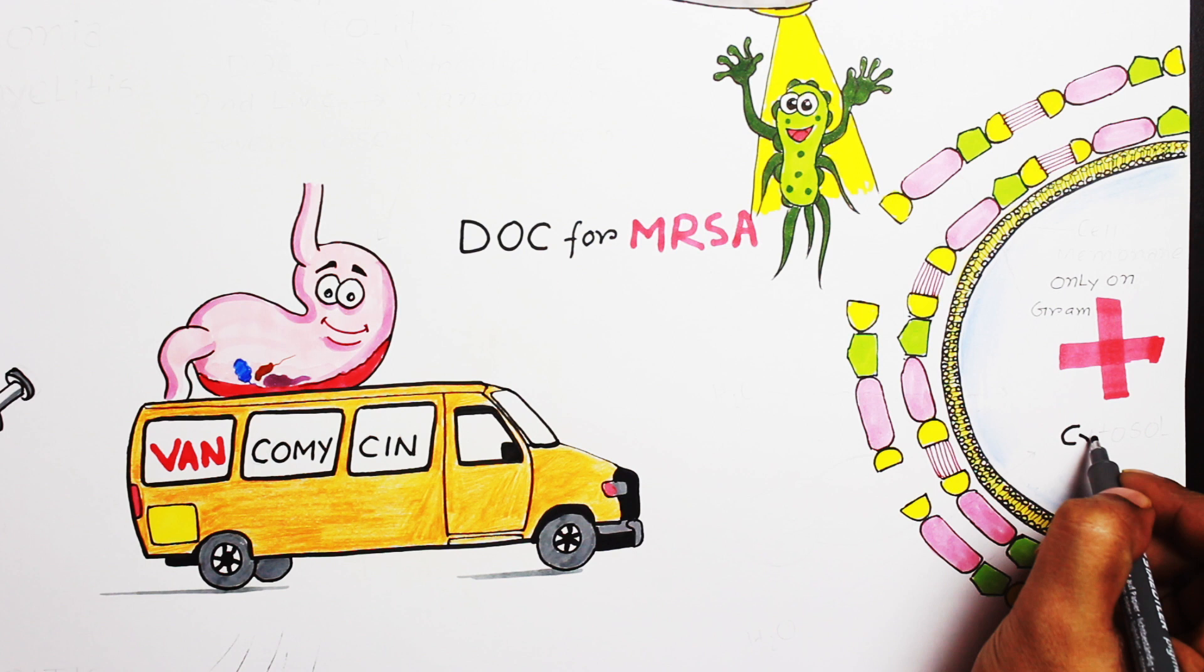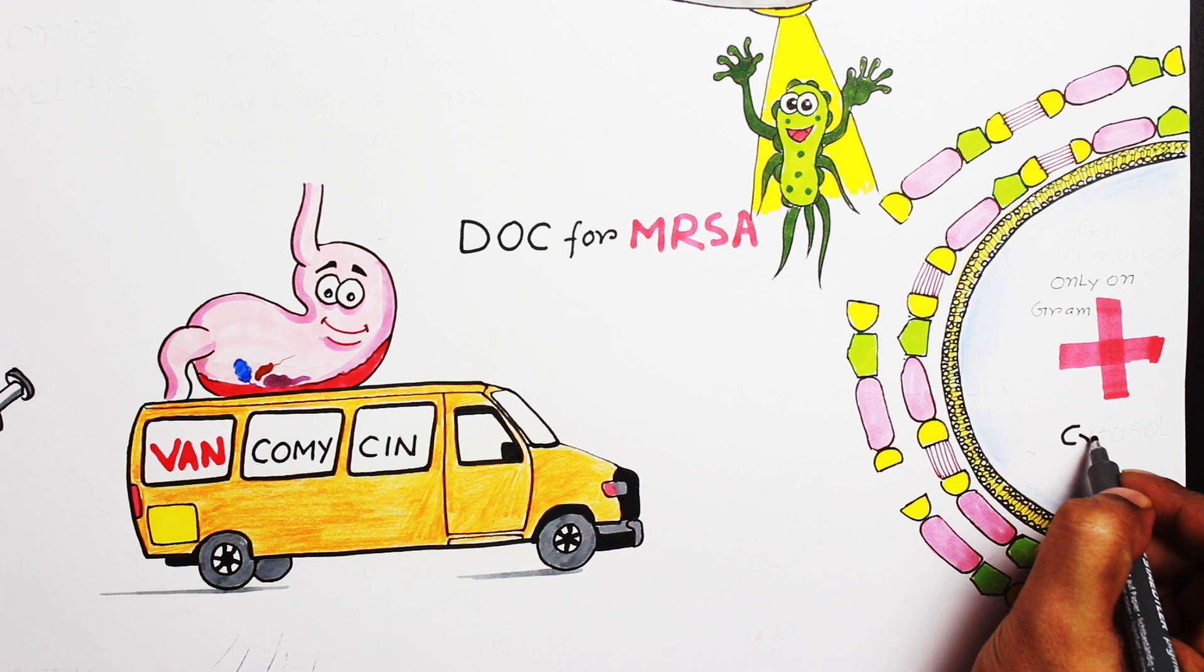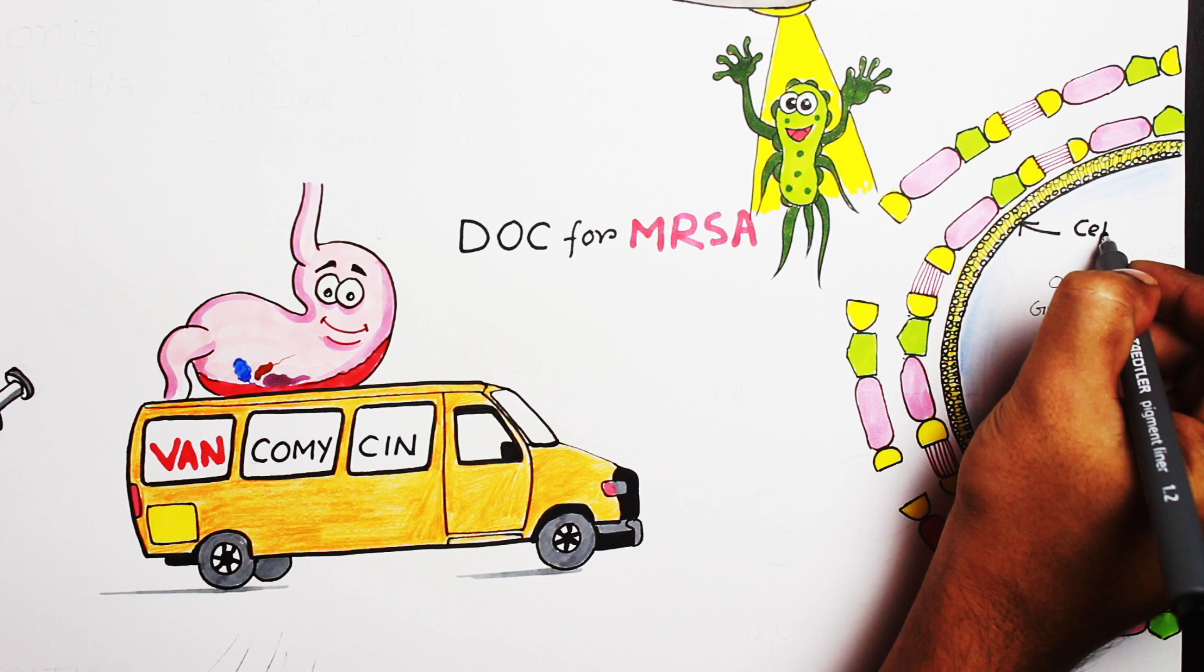Now let's discuss very briefly about the structure of gram-positive bacteria. This is cytosol which is surrounded by a lipid bilayer membrane or cell membrane, and just outside the cell membrane there is cell wall.